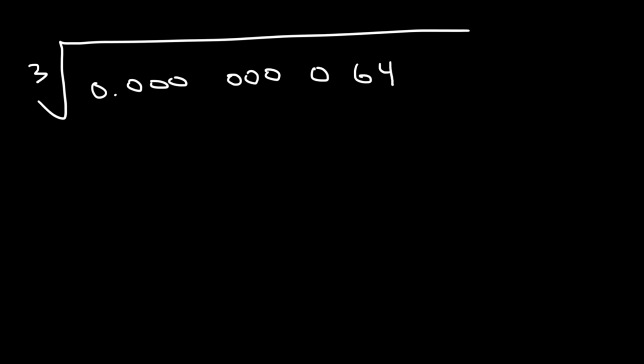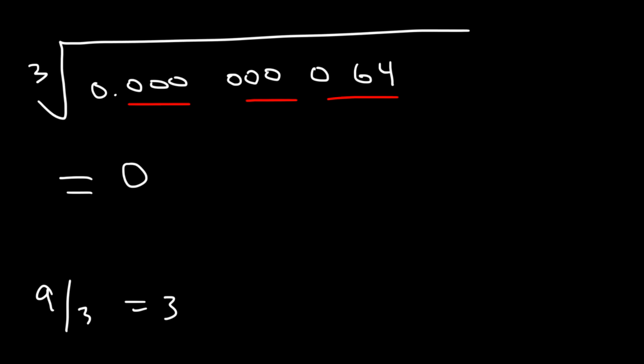Let's try one more example like that. What is the cube root of 0.000064? We have a total of 9 digits to the right of the decimal. The cube root of 64 is 4, and 9 divided by 3 is 3. So our final answer should have 3 digits to the right of the decimal point, making it 0.004. That's how you can take the square root or cube root of decimal numbers when the number of digits is a multiple of the index number.